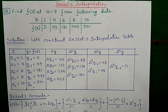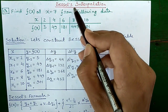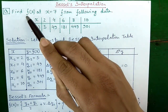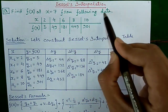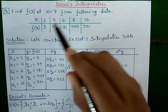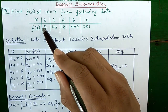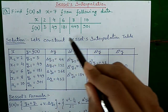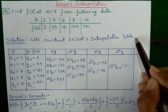Hi, I'm Sujoy, and today I will show you how to do Bessel's interpolation easily. Our question is: find f(x) at x equals 7 from the following data, where some x values and corresponding f(x) values are given. Let's construct the Bessel's interpolation table — it's very easy.